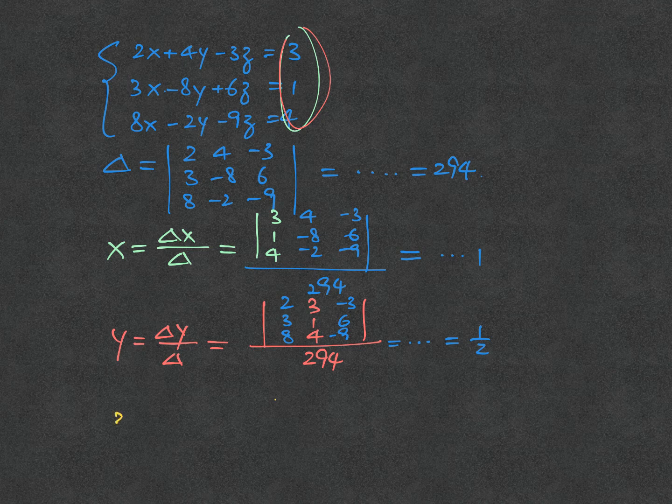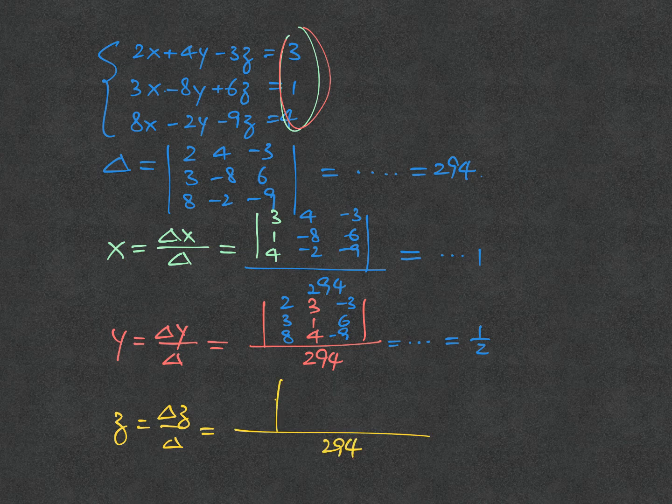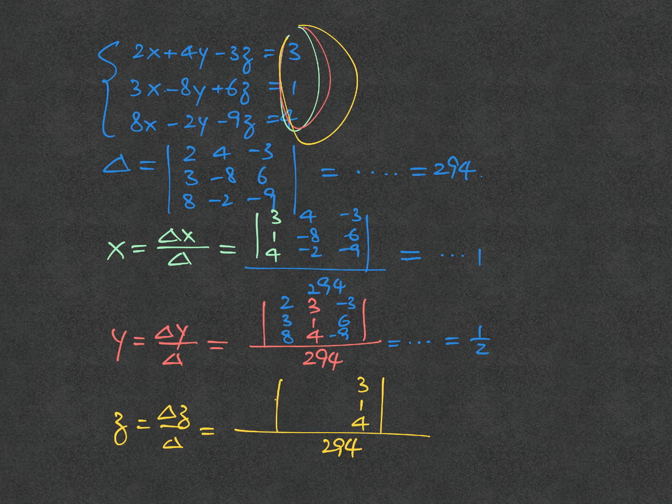Finally, we have z to be delta z over delta, so 294 at the bottom first. For delta z, we change the last column to 3, 1, 4.